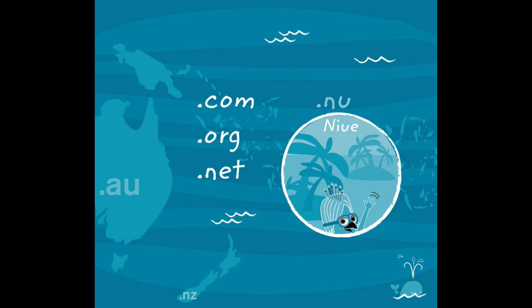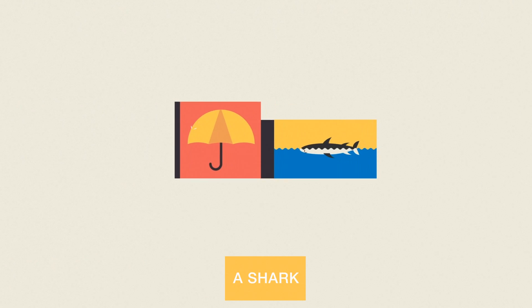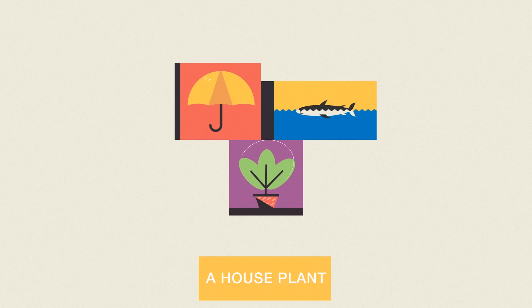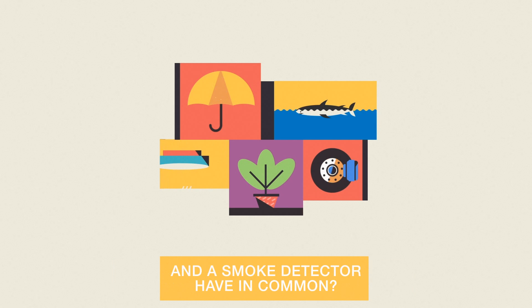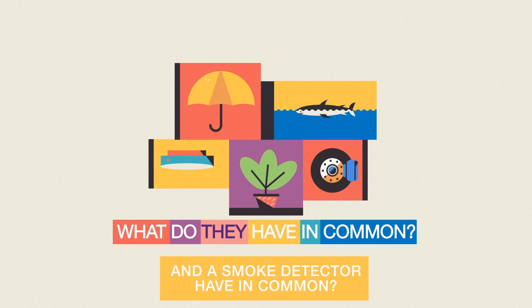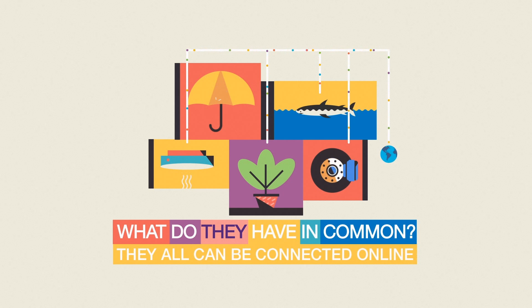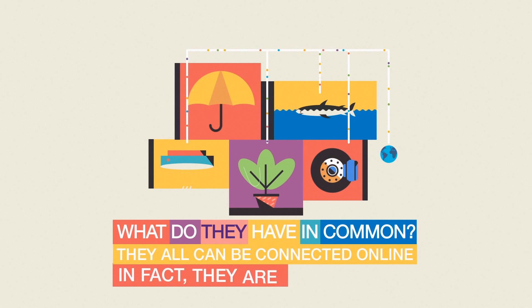The island of Nui has the country top-level domain .nu, which is used in the same way since the word 'nu' means 'now' in both Swedish and Dutch. What do an umbrella, a shark, a houseplant, the brake pads in a mining truck, and a smoke detector have in common? They can all be connected online, and in fact they are.